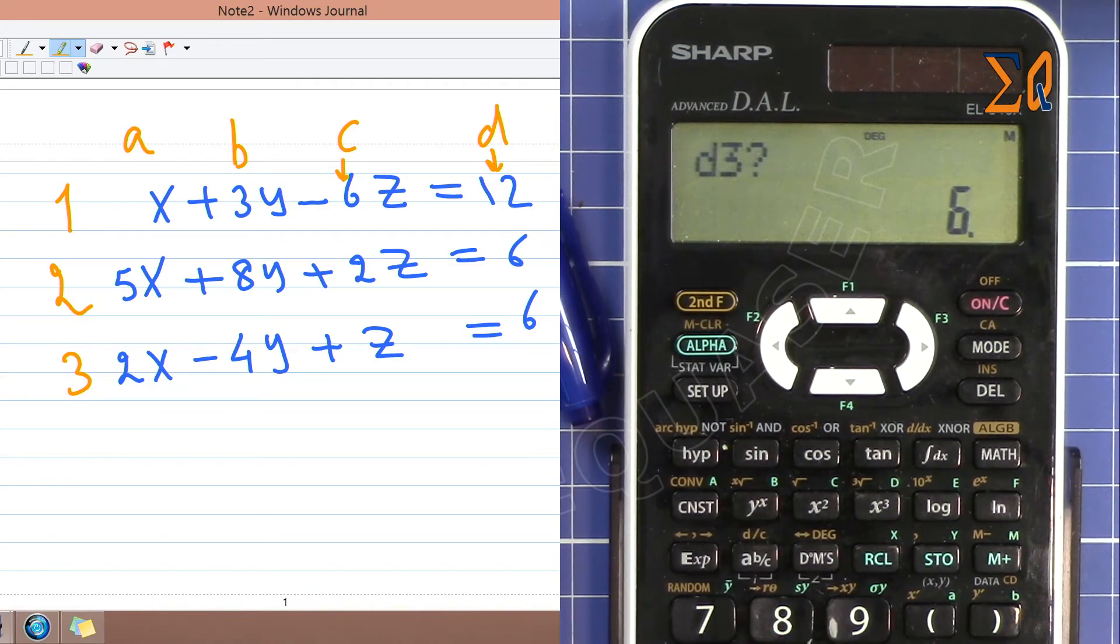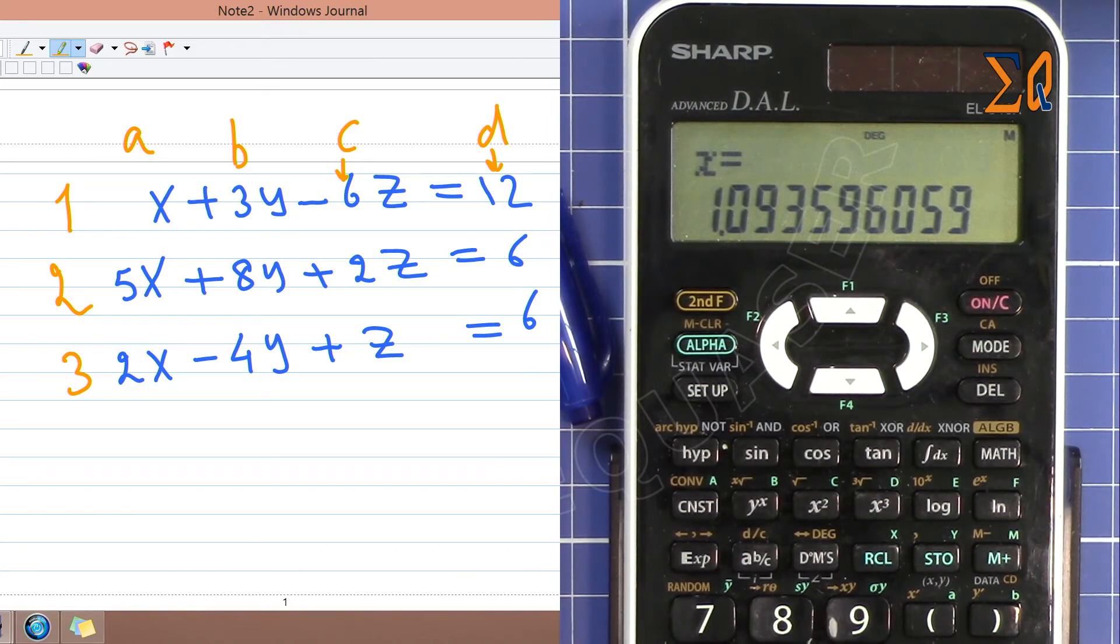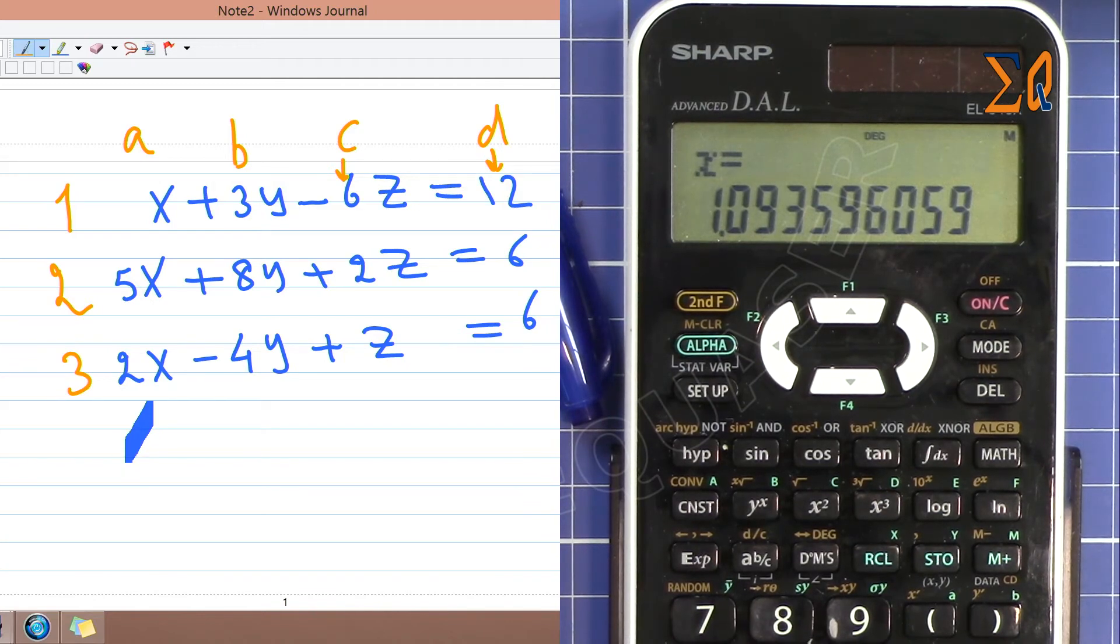Once you press equal sign you get all your values. X is 1.935. I'm pressing equal sign, Y is minus 0.443, and then press equal sign again and Z is 2.039.